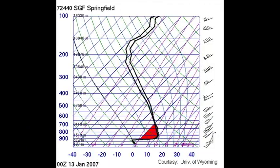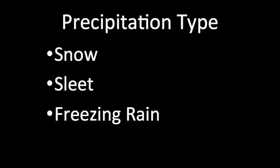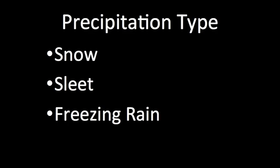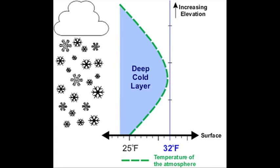Atmospheric temperature profiles are what influence precipitation types seen at the surface. These winter precipitation types include snow, sleet, and freezing rain. For snow, the entire column of the atmosphere must be below 32 degrees Fahrenheit or zero degrees Celsius. As the snow falls from the clouds, it will not have a chance to melt before reaching the ground.